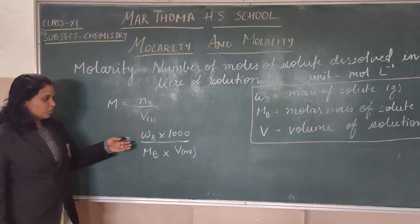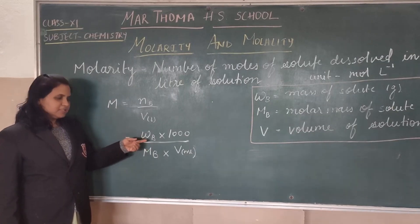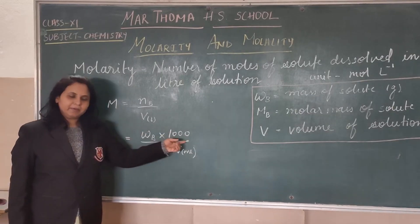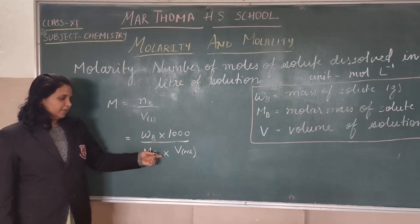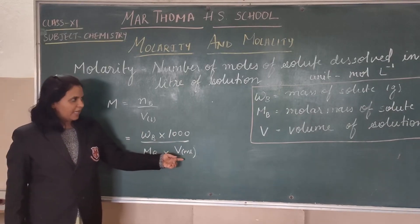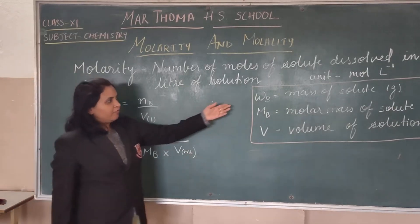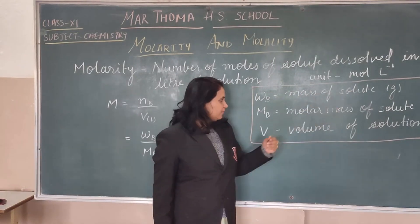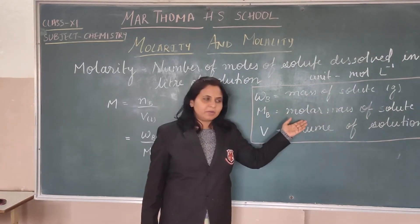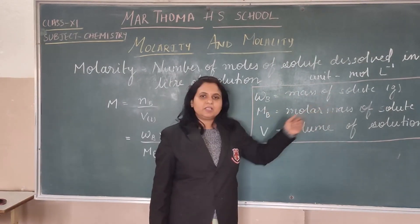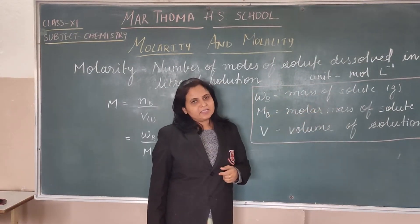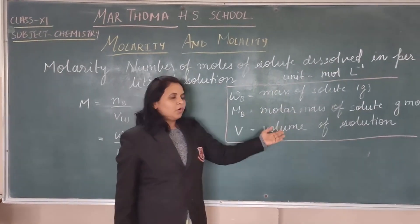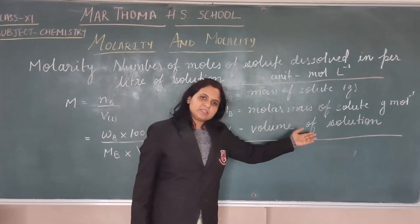Or, molarity equals Wb multiplied by 1000, upon Mv multiplied by Vm, where Wb is the mass of solute in grams, Mv is the molar mass of solute in grams per mole, and V is the volume of solution.